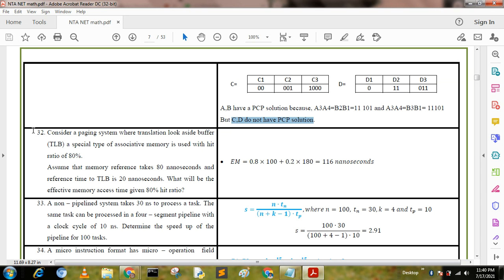Question 32: Consider a paging system where a translation lookaside buffer (TLB), a special type of associative memory, is used with a hit ratio of 80 percent. Assume that memory reference takes 80 nanoseconds and reference time to TLB is 20 nanoseconds. What will be the effective memory access time? Using the formula with 80 percent hit ratio: effective memory = 0.8 × 100 + 0.2 × 180 = 116 nanoseconds.